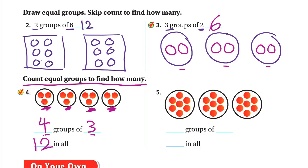How many groups of what? We have three groups and each group has seven. Skip counting by sevens: seven, fourteen, twenty-one. The total is twenty-one in all. Hope you guys enjoyed this session — have a nice day and goodbye!